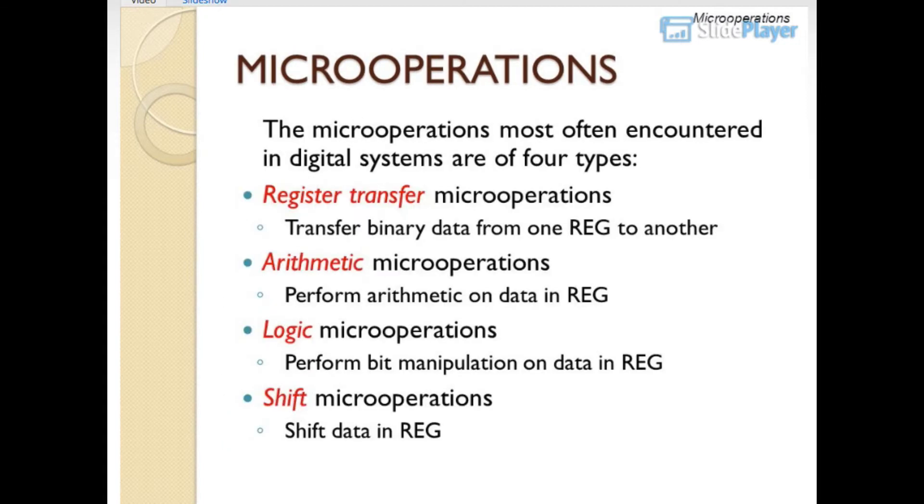The micro operations most often encountered in digital systems are of four types: register transfer micro operations transfer binary data from one register to another. Arithmetic micro operations perform arithmetic on data in registers. Logic micro operations perform bit manipulation on data in registers. Shift micro operations shift data in registers.